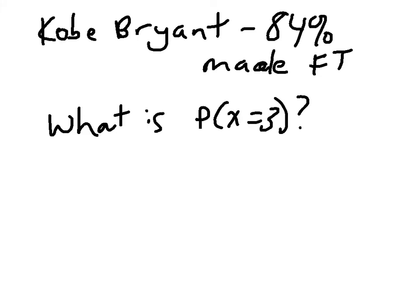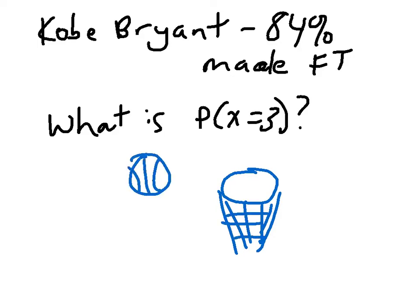The question I'm going to use constantly throughout this video is, again, Kobe Bryant is an 84% free throw shooter, and he is going to make, we're going to see what's the probability of him making exactly three out of five free throws. And we're going to examine this as a binomial situation and look at how we can calculate this.